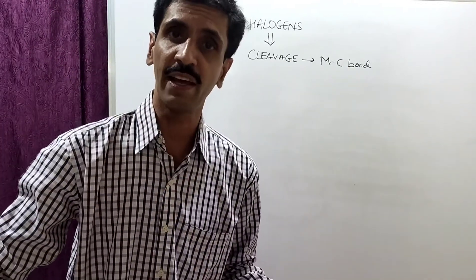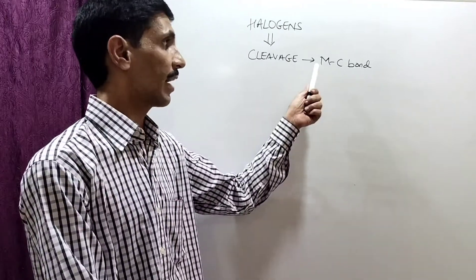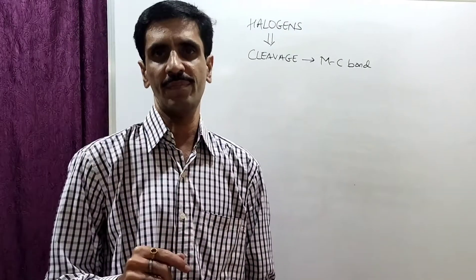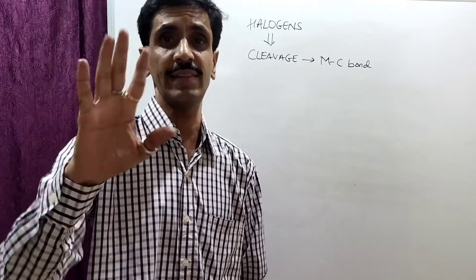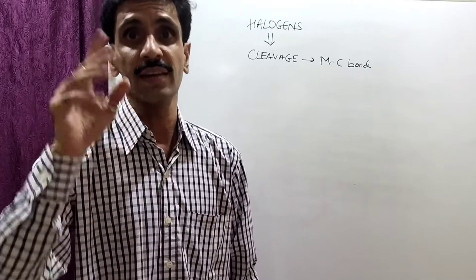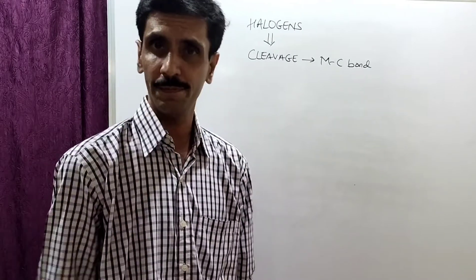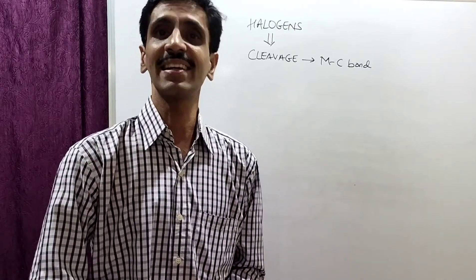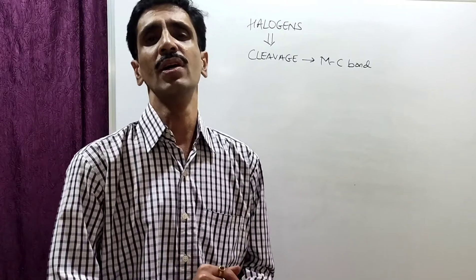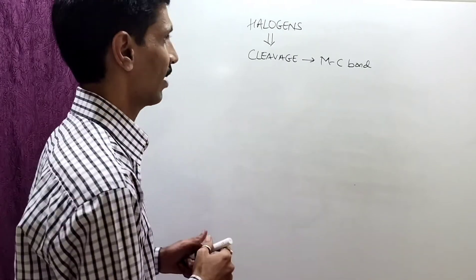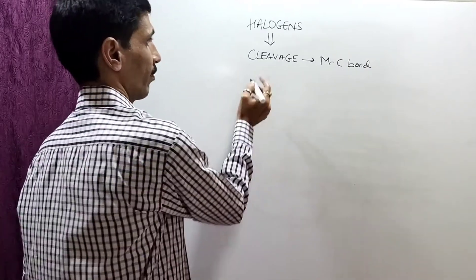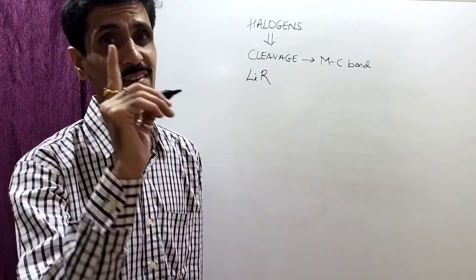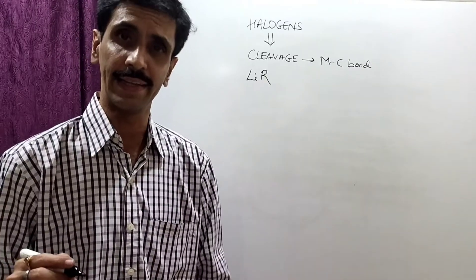The extent to which the cleavage takes place entirely depends on the electropositive character of the metal M. In simple words, they are directly proportional — greater the electropositivity of the metal, greater is going to be the cleavage of the metal-carbon bond. So we start with certain examples. We start with the first alkali metal, and for that I give you the example of lithium. We have the organometallic compound including lithium, so we have LiR, where R is an alkyl group. Because alkali metal has a valency of one, there is only one R associated with lithium.